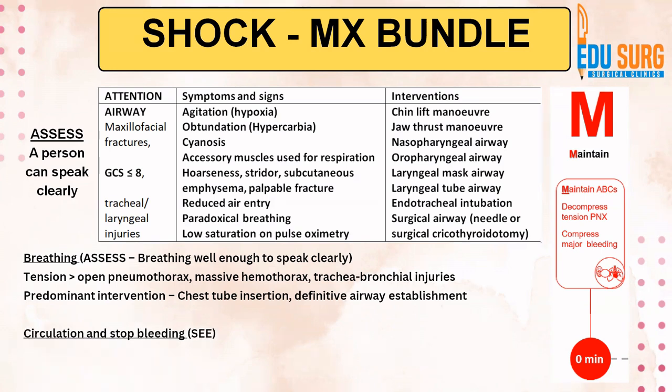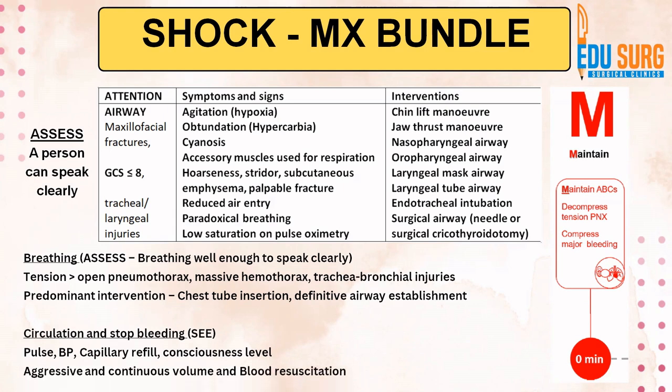When we talk of circulation and stop bleeding — C is circulation and stop bleeding. You have to check if there is blood loss or fluid loss, which is usually visible. Pulse, blood pressure, capillary refill, and mental status basically help you in assessing C. Aggressive and continuous volume and blood resuscitation is the predominant intervention.